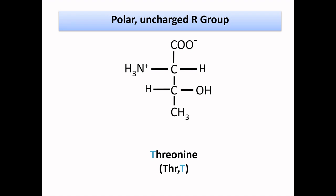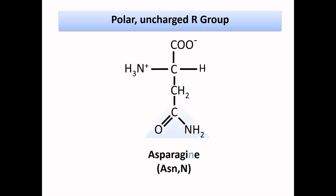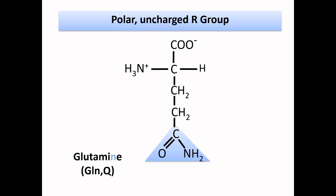Threonine is more branched than serine — it has two methyl groups and one hydroxyl group, and the arrangement gives it a T-shaped structure, so remember this T-shaped structure as threonine. Cysteine is similar to serine except it has an SH group, called the sulfhydryl or thiol group, in the place of the hydroxyl group of serine. Asparagine has an amine group, that is a CONH₂ group, in the branch chain and one carbon methyl group, whereas glutamine is similar to asparagine except it has two methyl groups in the side chain.